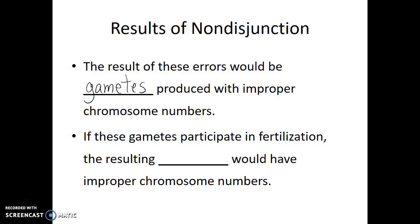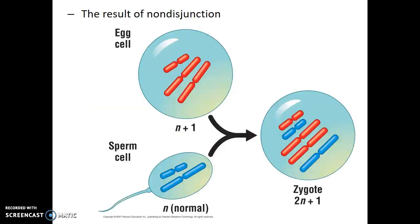If these gametes then participate in fertilization, the resulting offspring would have improper numbers of chromosomes. For example, if the haploid number is 2 and the diploid number is 4, yet the egg cell is haploid plus 1 — meaning there's one extra chromosome in that egg cell — then when sperm and egg fuse, the resulting zygote is diploid plus 1.